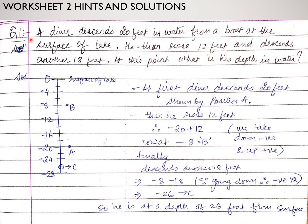In that worksheet, question 1 was: a diver descends 20 feet in water from a boat at the surface of the lake. So there is a boat on the surface of the lake. Suppose this is the surface of the lake, measured as 0 feet. He then rose 12 feet and descends another 18 feet. At this point, what is his depth in the water?